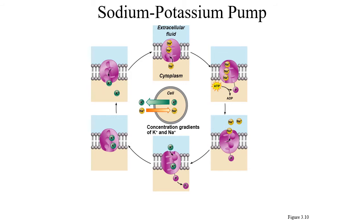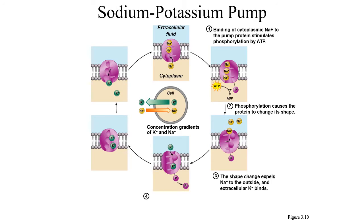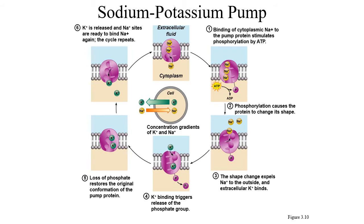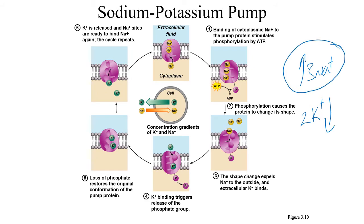One of the most important protein structures in our cells is the sodium-potassium pump. It moves sodium and potassium in opposite directions — three sodium ions out of the cell and two potassium ions into the cell. This creates a gradient where there is a lot of sodium outside the cell and a large amount of potassium inside the cell.